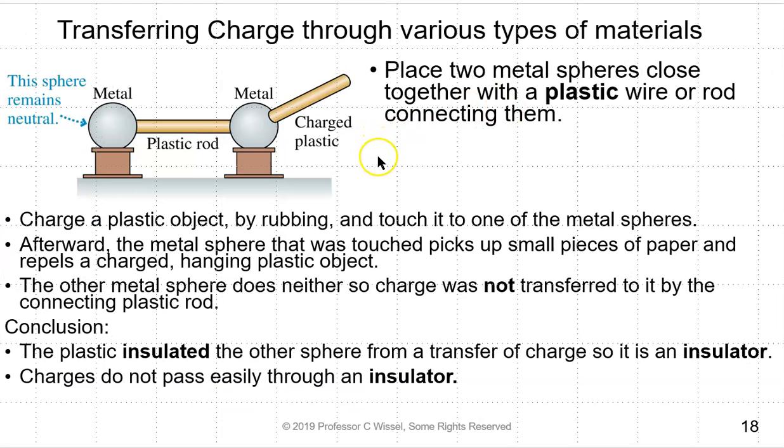We're going to try a slightly more complicated experiment. Take two metal spheres and connect them with a plastic wire or rod between them. Charge a plastic object by rubbing and touch it to one of the metal spheres. Afterward, this metal sphere that was touched will pick up small pieces of paper and repel a charged hanging plastic object. The other metal sphere does neither, so the charge was not transferred to it by the connecting plastic rod. The conclusion: the plastic insulated the other sphere from transfer charge, so it is a material we'll call an insulator. Charges do not pass easily through an insulator.